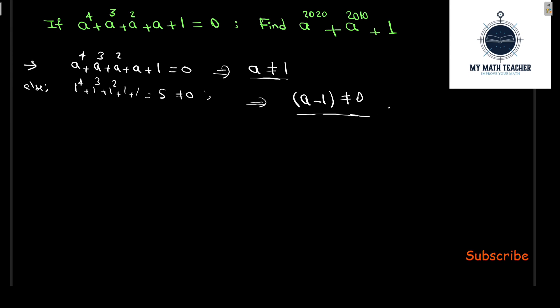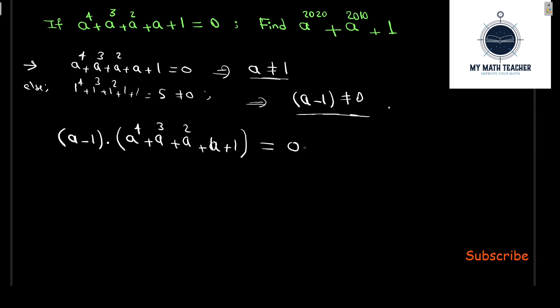Since A minus 1 is different from 0, we can multiply both sides by A minus 1. We multiply A^4 plus A^3 plus A^2 plus A plus 1 equals 0 by A minus 1. Multiplying 0 by A minus 1 still gives 0. Now let's expand.